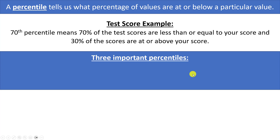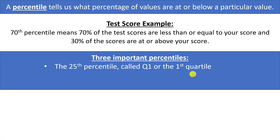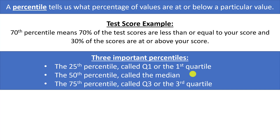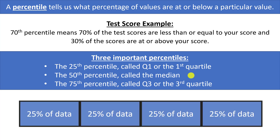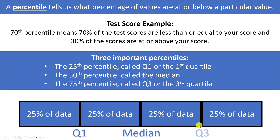There are three important percentiles we are going to discuss: the 25th percentile, sometimes called the first quartile or Q1; the 50th percentile, which is the same as the median; and the 75th percentile, called Q3 or the third quartile. We call these quartiles because they split our data into quarters. The first quartile is at the top end of the bottom 25% of data, the median splits the data into two halves, and 75% of data falls below Q3.